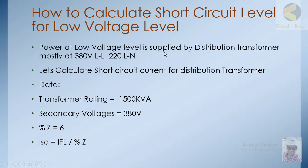Power at the lower level is supplied by a distribution transformer, mostly at 380 volts line-to-line and 220 volts line-to-neutral. Now let us calculate the short-circuit current for the distribution transformer.